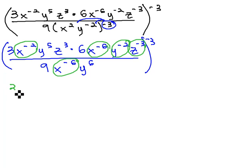As we do, what's left in the numerator is a 3, y to the 5th, z cubed, times 6, and then we moved an x to the negative 6 up, making it x to the positive 6, over.